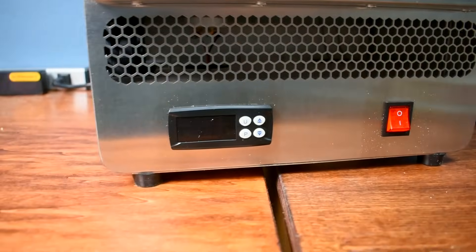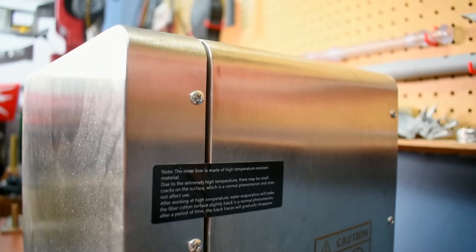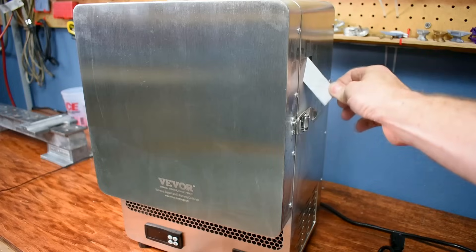This looks like the same control setup that's in the melting furnace. What does this say? Inner liner is made of temperature-resistant material. Maybe small cracks. Don't worry about it. Get out of there.